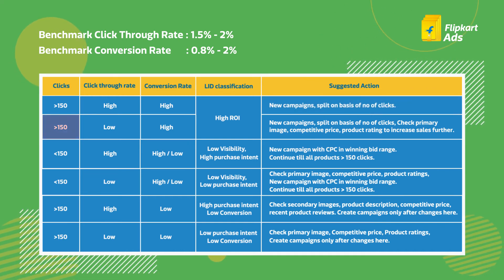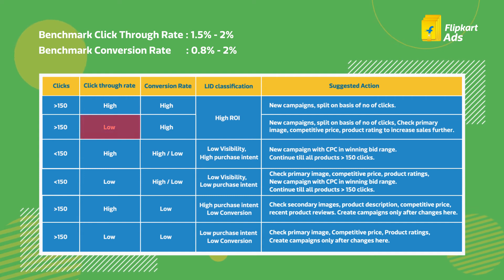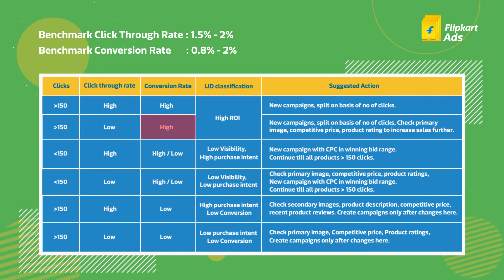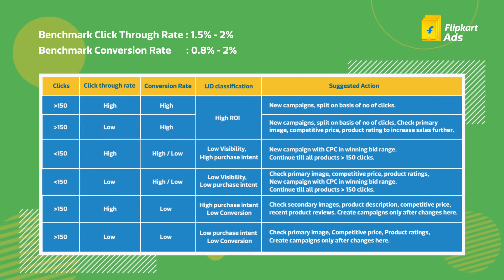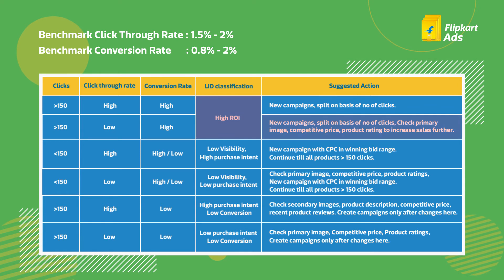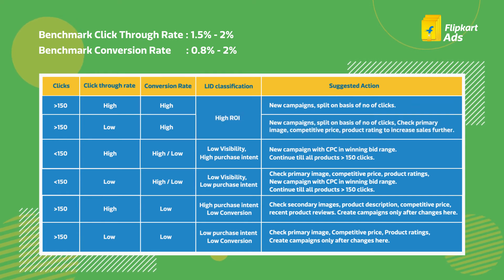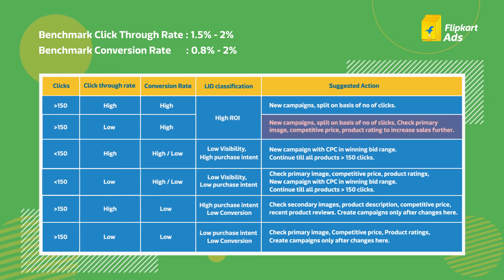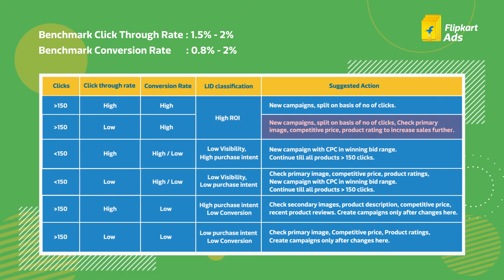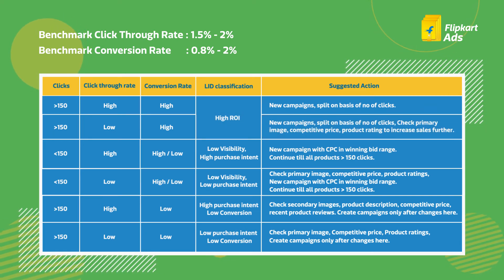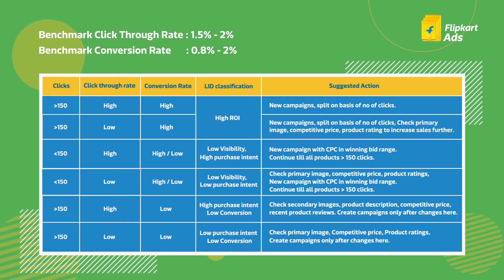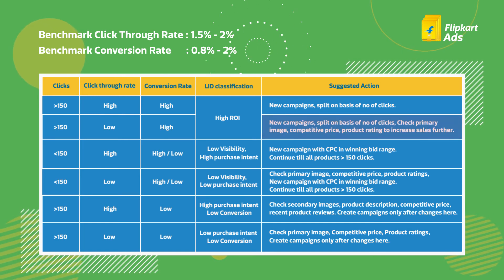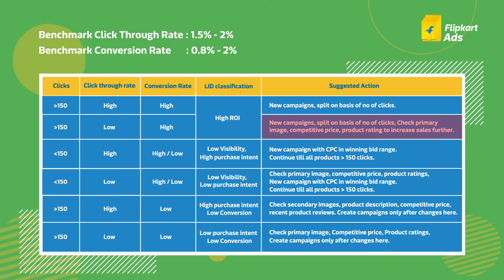Listings with over 150 clicks and low click-through rate but high conversion rate — these are also your high ROI listings. Create new campaigns and split them on the basis of number of clicks. Check primary image, competitive price, and product rating to increase sales further.